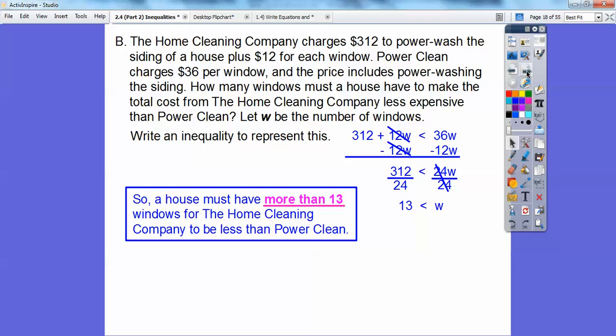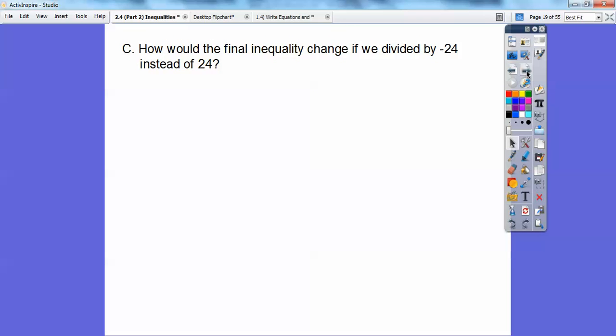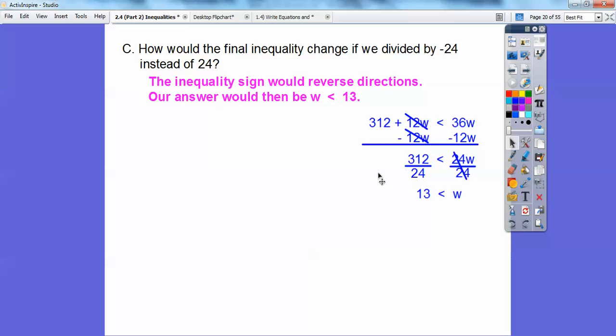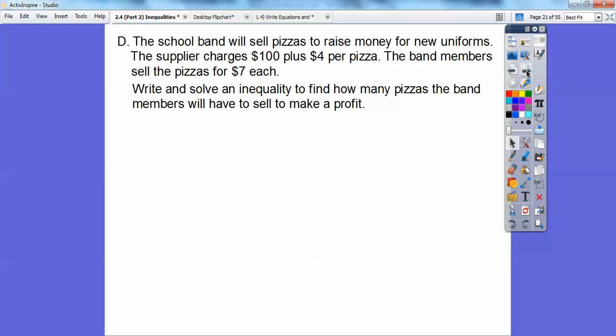How would the final inequality change if we divide by negative 24 instead of 24? When we divide by a negative, it would flip this inequality around to be the other way. So the inequality, instead of pointing at the 13, it flips and makes it point at the W. It just reverses the direction when you multiply or divide by a negative.